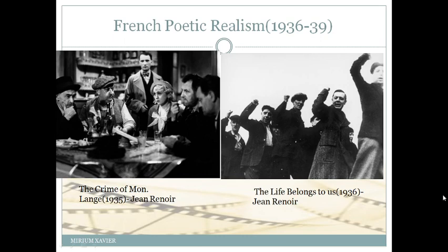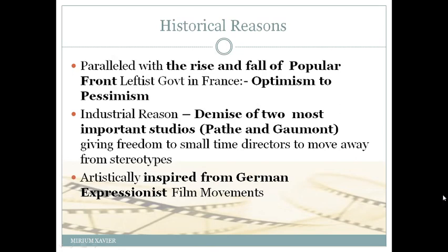Now we move to the next movement: French Poetic Realism, which happened between 1936 and 1939 — the period of the Second World War. Important films include 'The Crime of Monsieur Lange' and 'The Life Belongs to Us,' both by Jean Renoir. You should understand that French Poetic Realism is not as strongly unified a movement as Soviet Montage or German Expressionism.